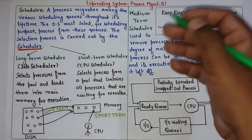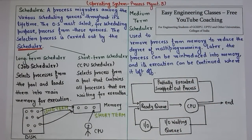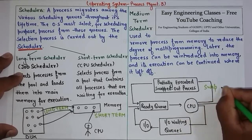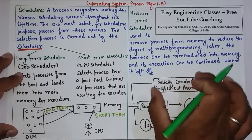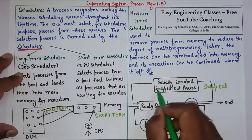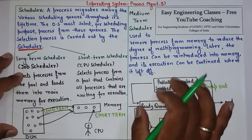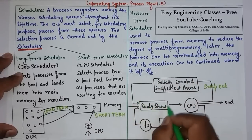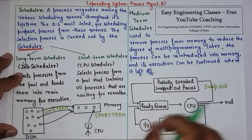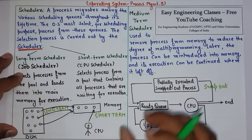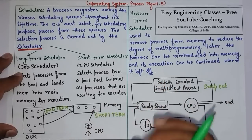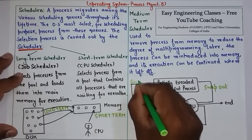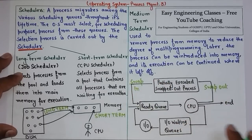In the medium-term scheduler diagram, a process running in the CPU can be swapped out and placed in a block containing partially executed swapped-out processes. The medium-term scheduler then selects those processes and puts them back into the ready queue, from which the short-term scheduler picks them for execution. The key feature is that the process resumes from the same stage at which it was swapped out — this is called swap-in.